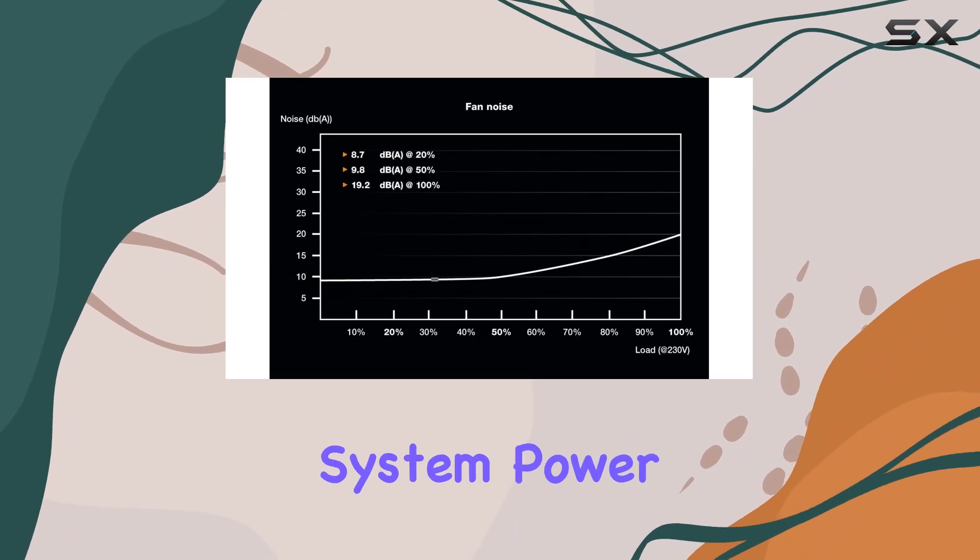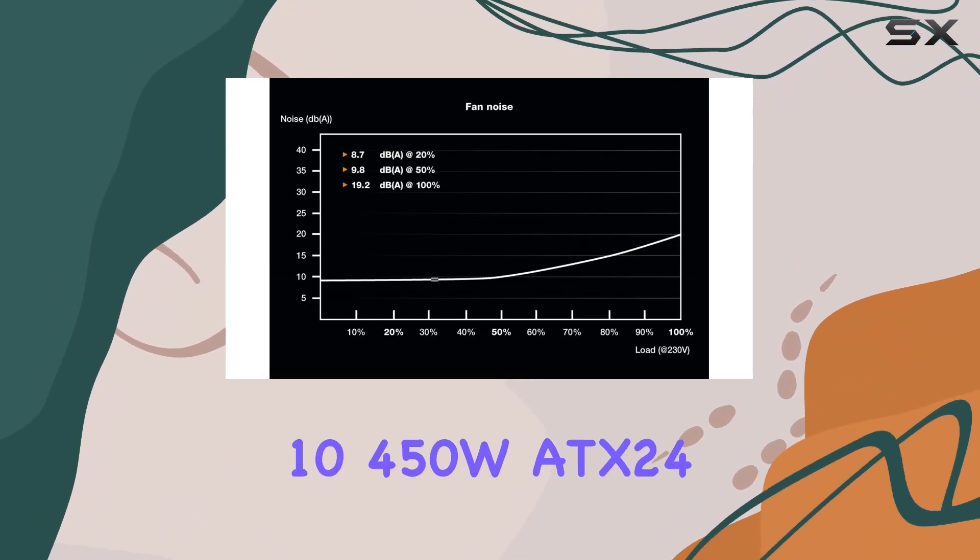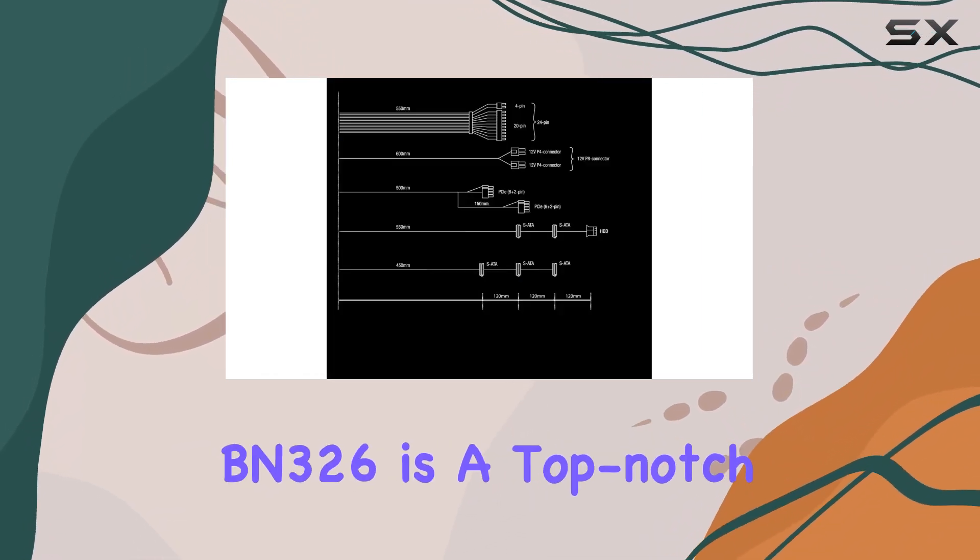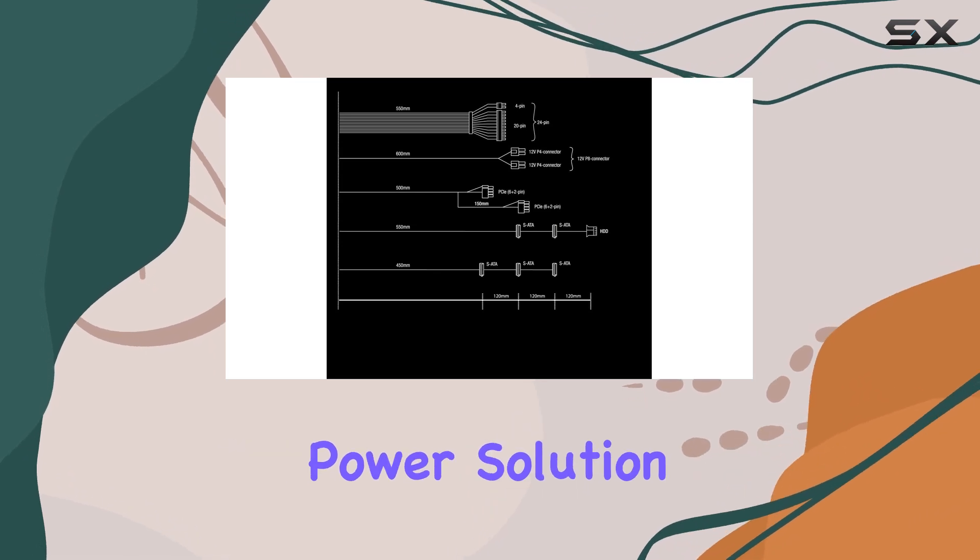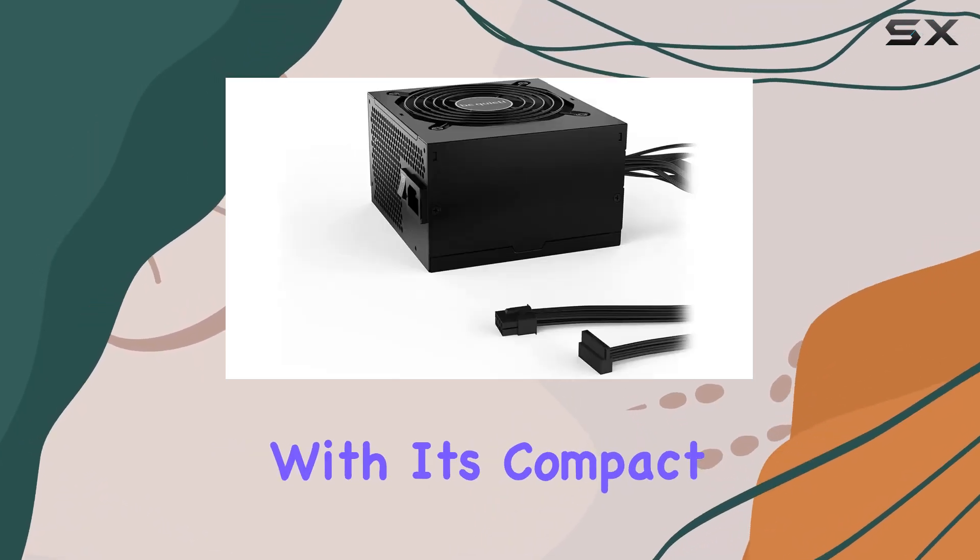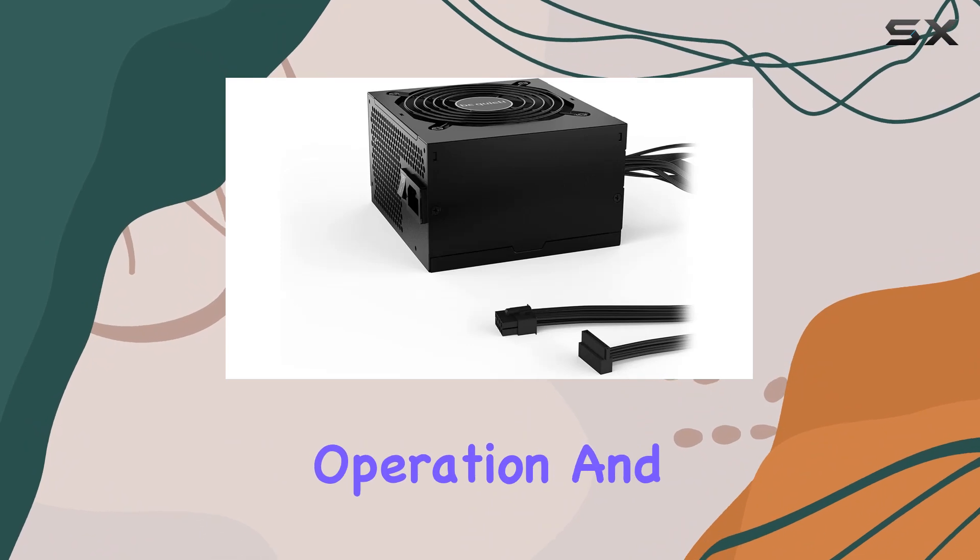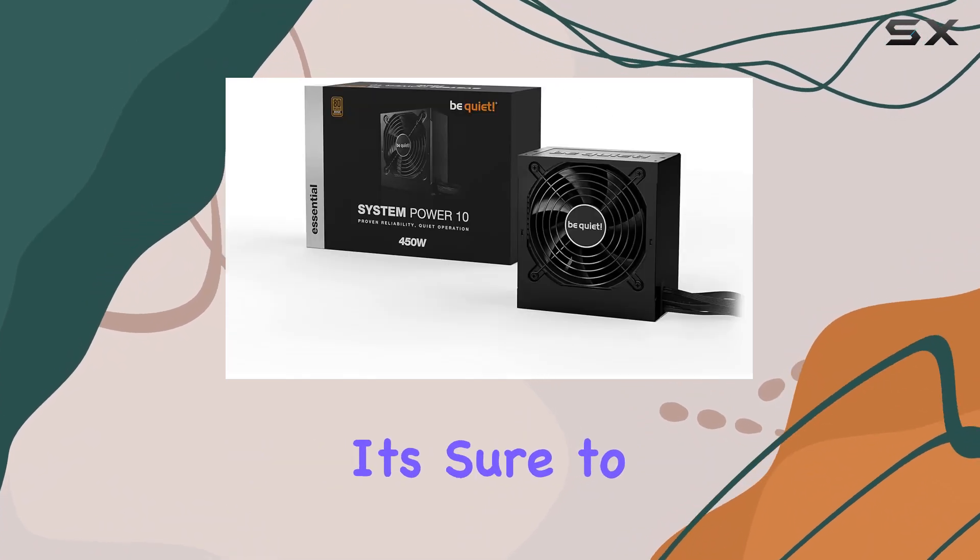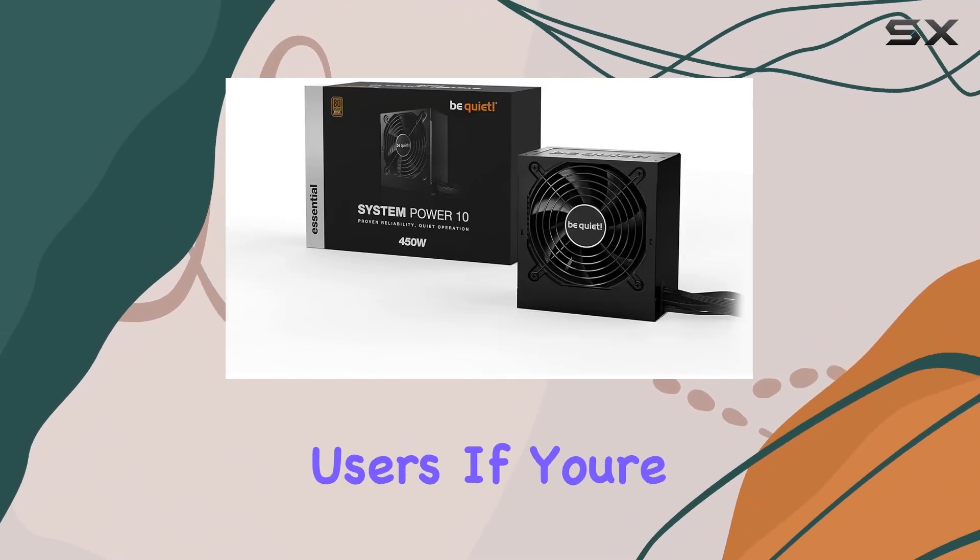Overall, the be quiet System Power 10 450W ATX24BN326 is a top-notch power solution for your PC. With its compact size, silent operation, and reliable performance, it's sure to satisfy even the most discerning users.